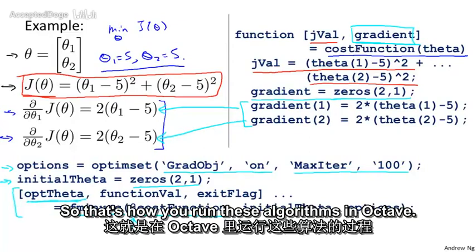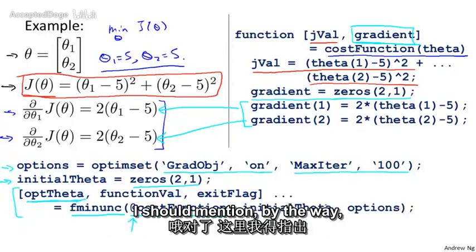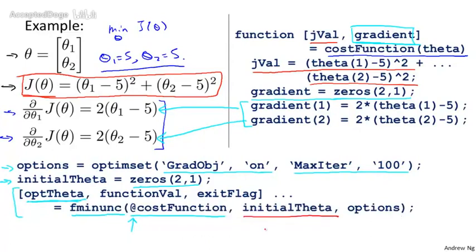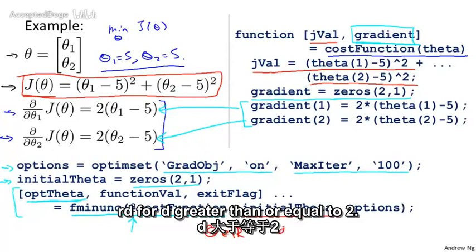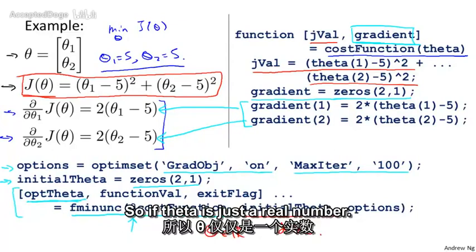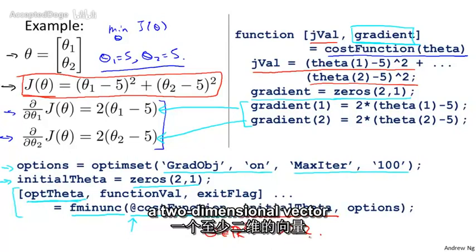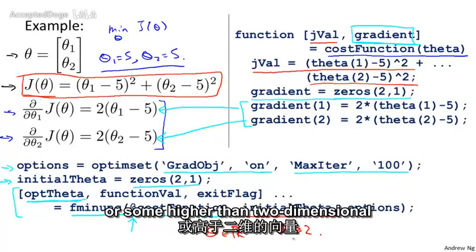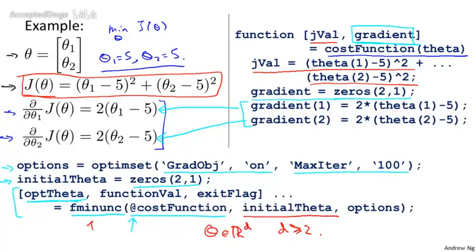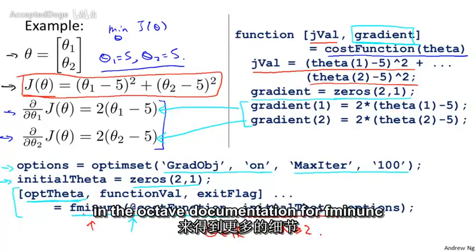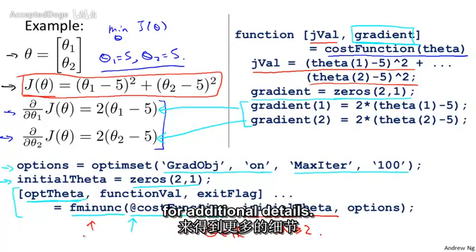That's how you run these algorithms in Octave. I should mention that for the Octave implementation, the parameter vector theta must be in R^d for d greater than or equal to 2. So if theta is just a real number — not at least a two-dimensional vector — fminunc may not work. In case you have a one-dimensional function that you need to optimize, you can look in the Octave documentation for fminunc for additional details.